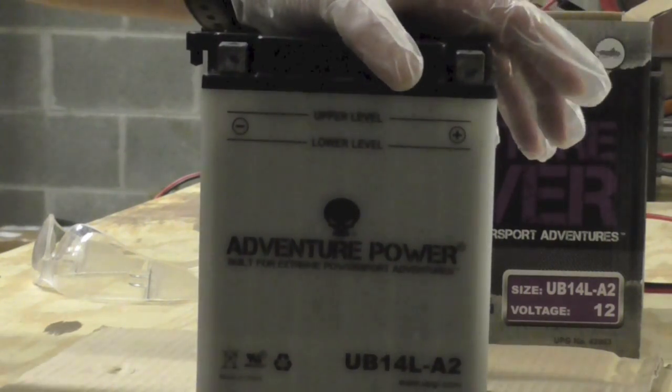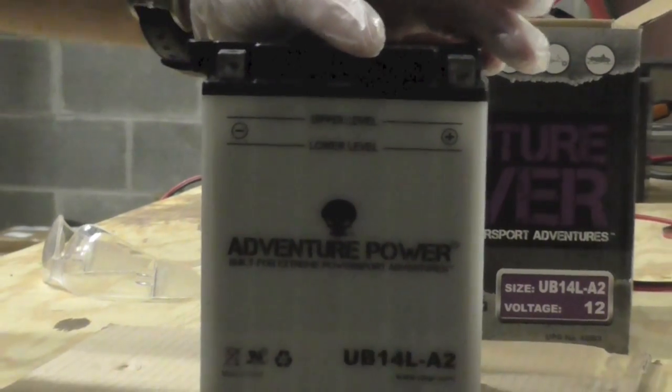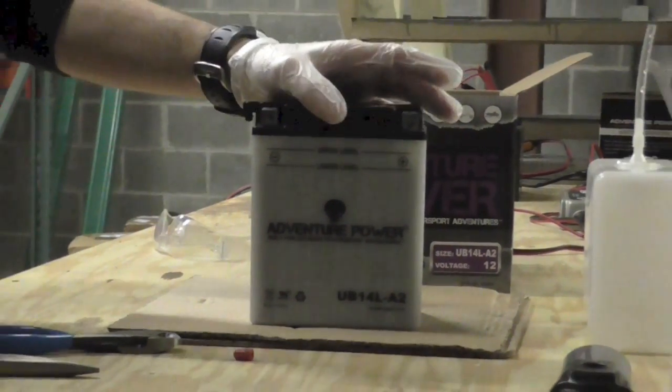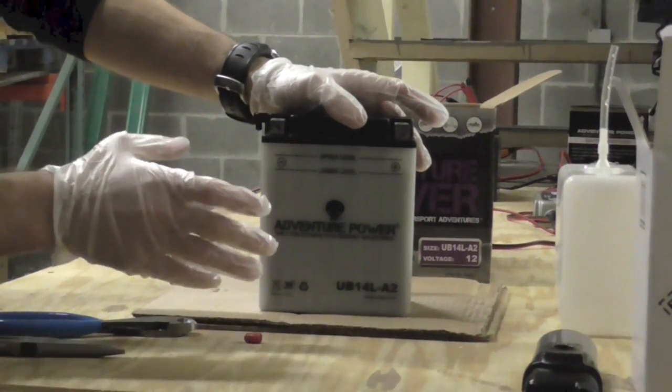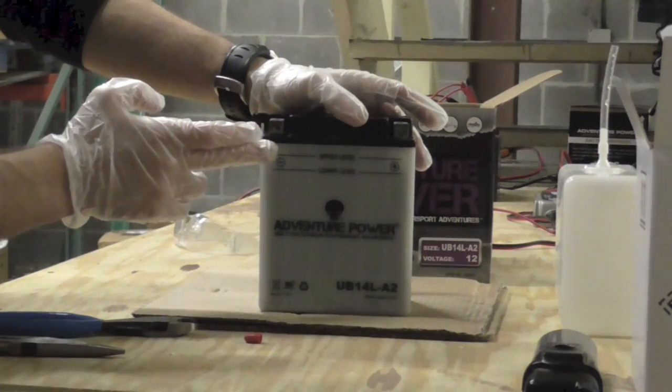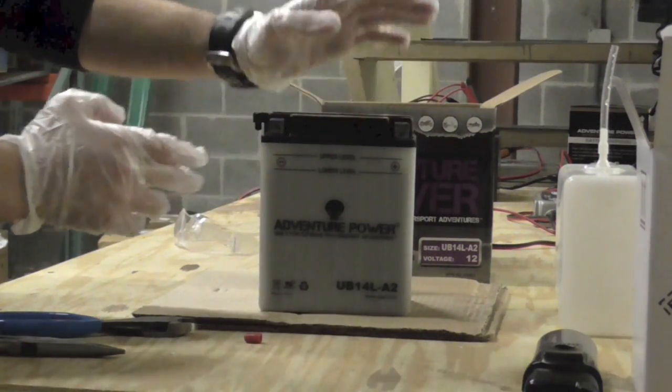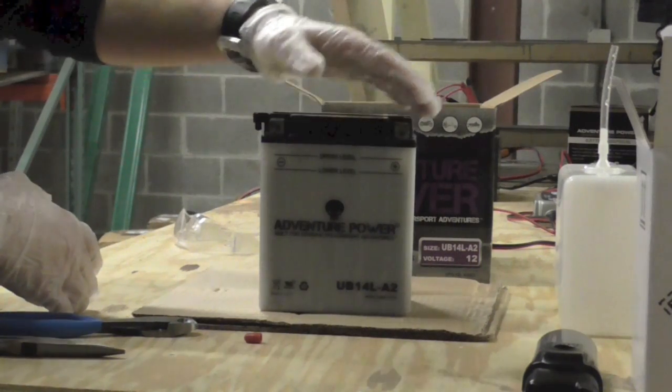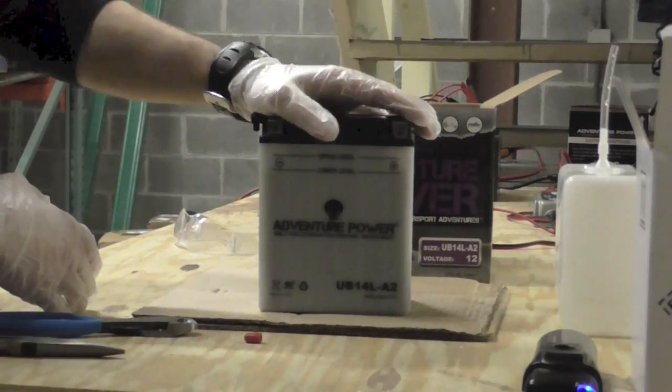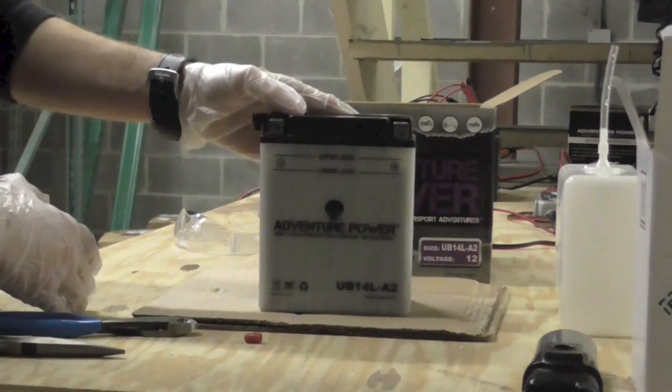We've finished filling the battery, and we've let it sit for about 15 minutes or so, which is something you have to do in order to let the acid settle. After the 15-minute period, check that upper level line one more time. Make sure all your cells are up to that line. After the 15-minute period, some of the acid will absorb into spots that it wasn't getting into before, so you do want to double-check that. We've already gone ahead and done that here.